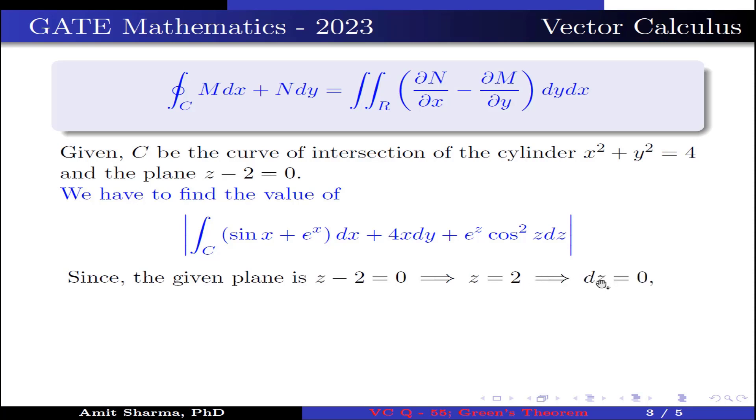Since the given plane is z - 2 = 0, which implies z = 2. If we differentiate it, we get dz = 0. Now, the value of dz is 0, we have to find the value of |∫_C (sin x + e^x)dx + 4x dy|. This is the value of M and this is the value of N.